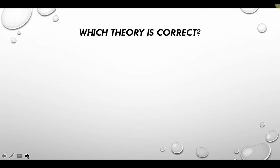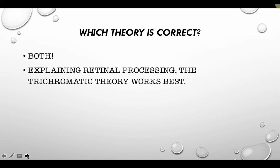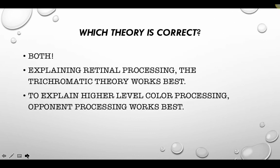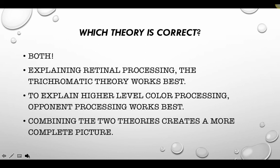Hopefully that was a cool after-image. Which theory is correct? They're both correct. Trichromatic theory works best when explaining the cones, while opponent processing theory works best when explaining color processing in the ganglion cells and the brain. Combining the two theories creates a more complete picture of color vision processing. Please review and be able to explain how after-images take place and the difference between the two color vision theories.